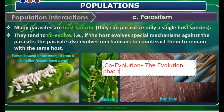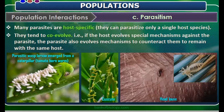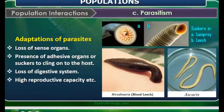Co-evolution takes place equally in the organisms. For example, if a host evolves special mechanisms against the parasite, the parasite also evolves mechanisms to counteract them, to remain with the same host. This is known as co-evolution between the parasites and the hosts.